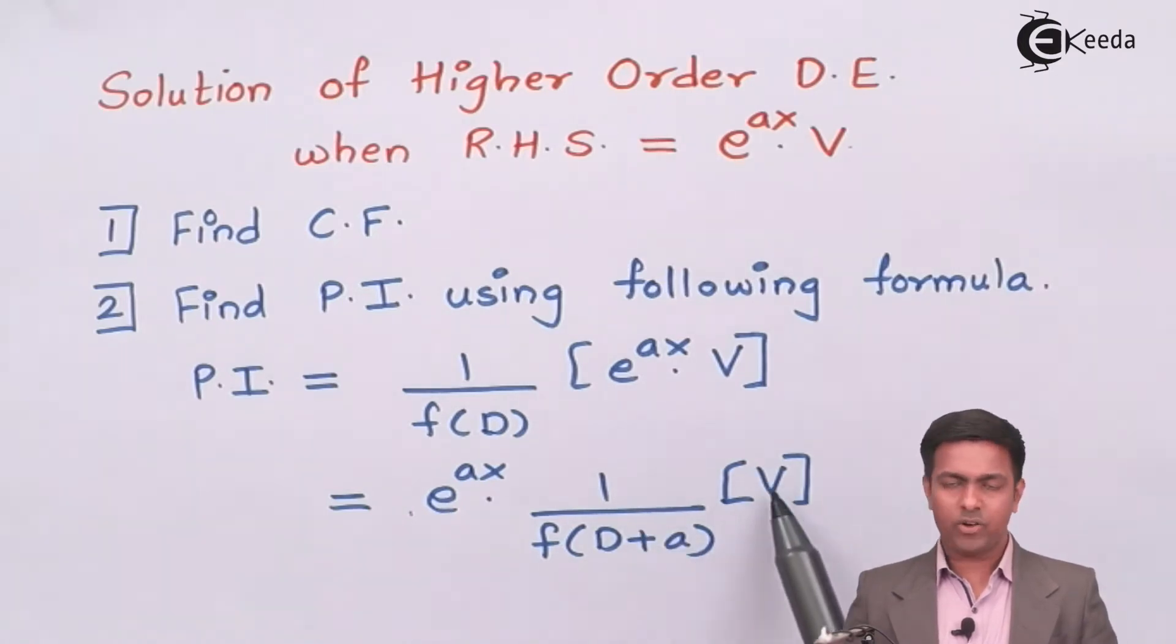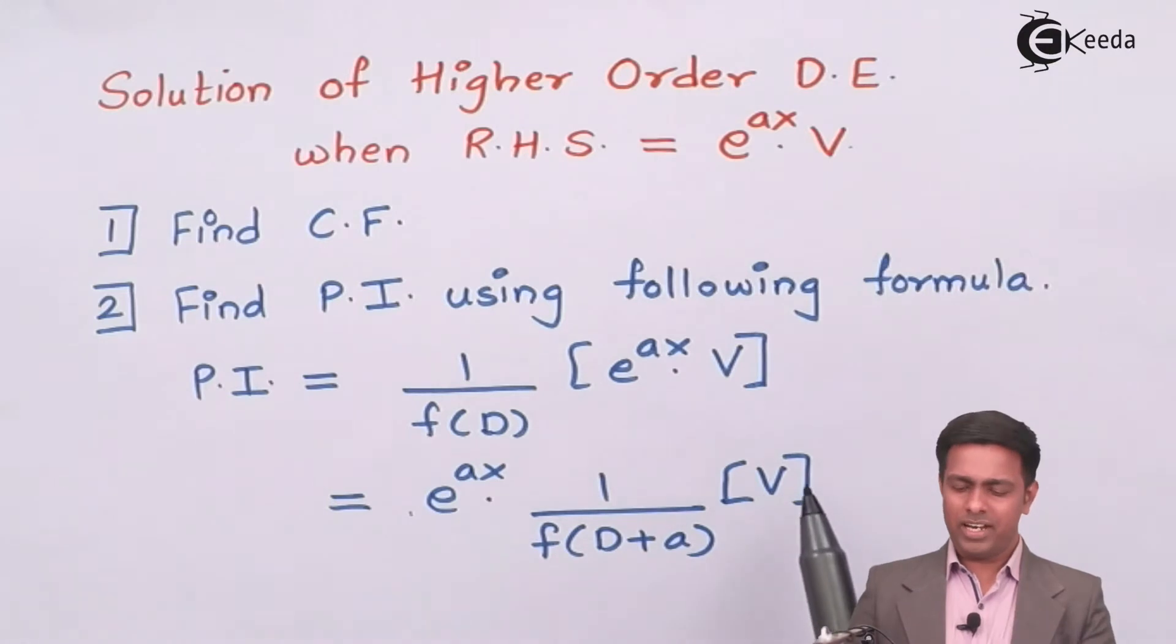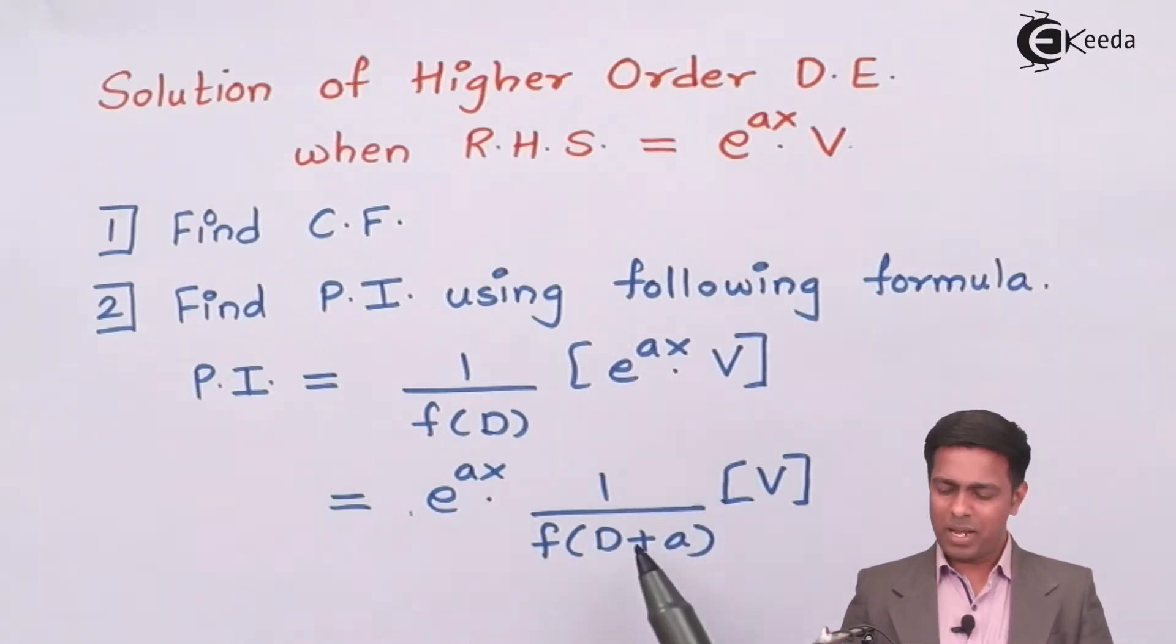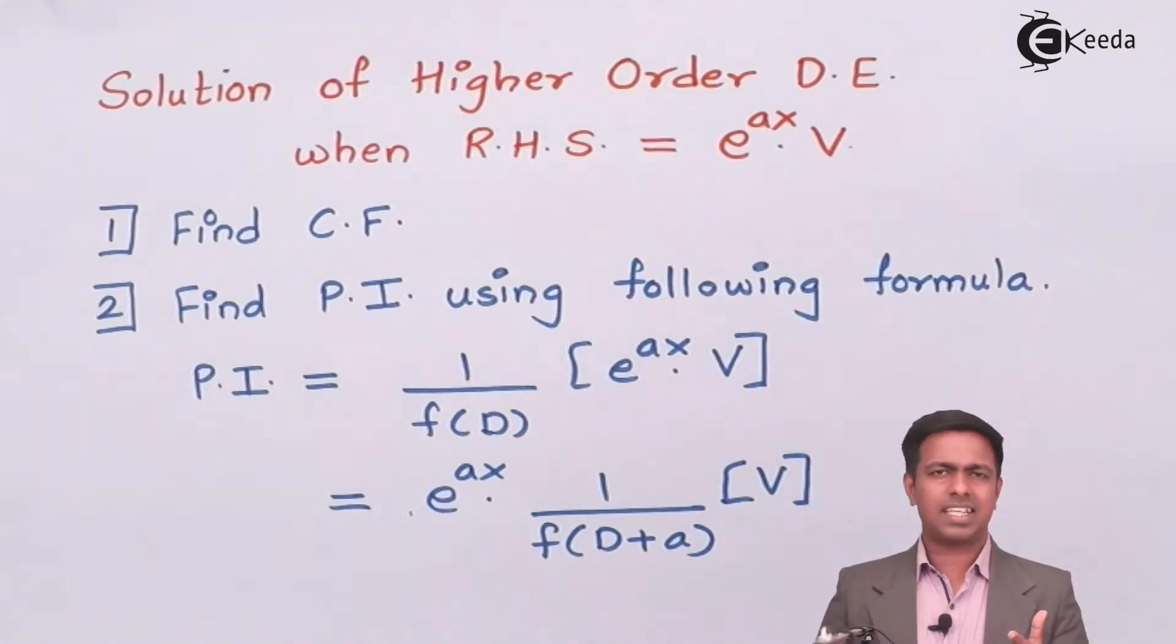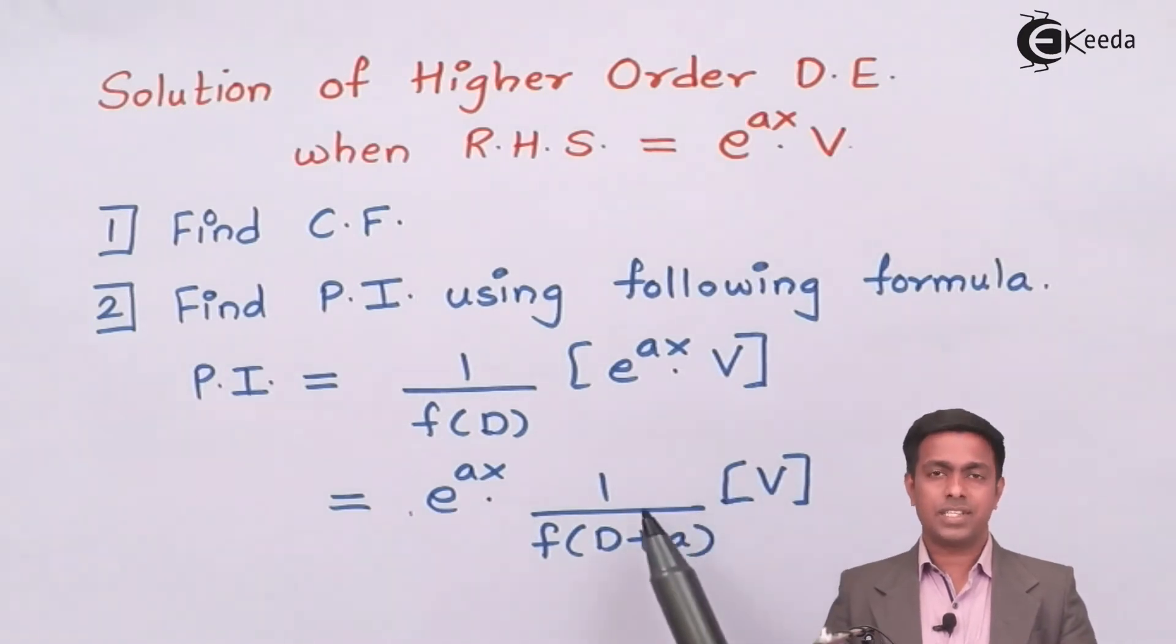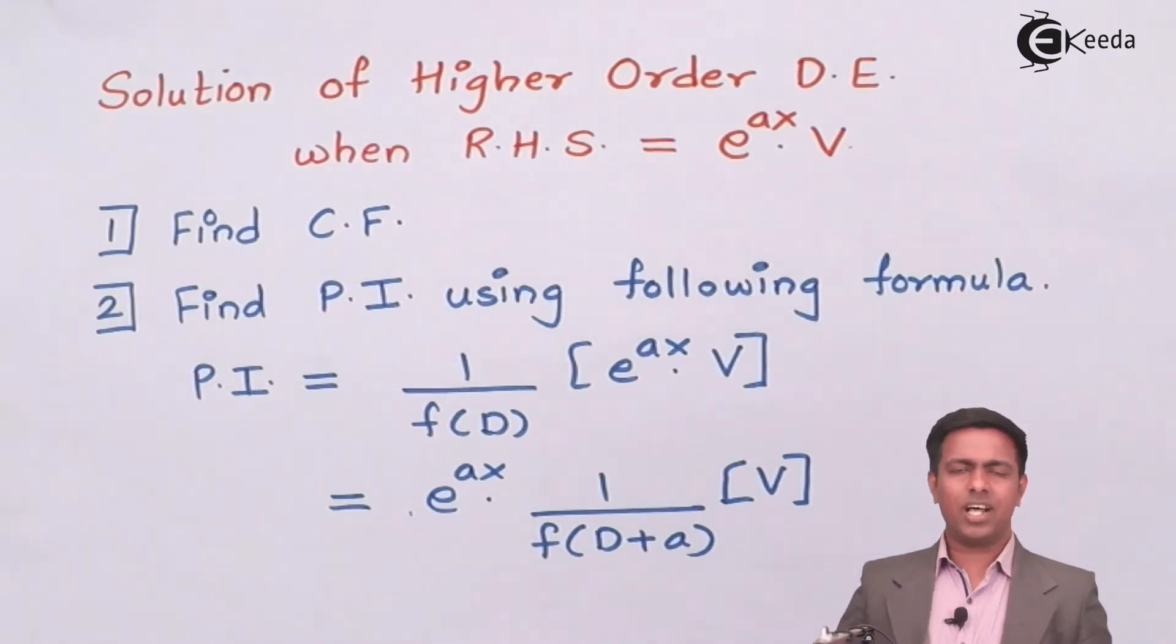That operator will apply on only V. This time we will not apply this operator on e to the power ax. Now V is nothing but the function of x, so this can be a trigonometric function, an algebraic function, or any function of x. We will use different rules to find the value of 1 upon f of D plus a into V. This is how we'll find the complementary function and the particular integral, then we'll add both these values to get the complete solution of higher-order differential equation.